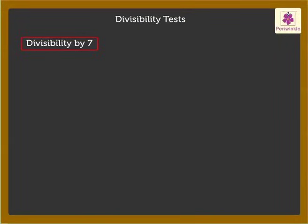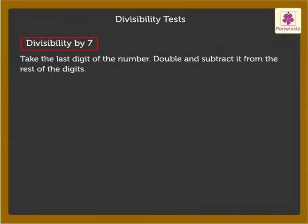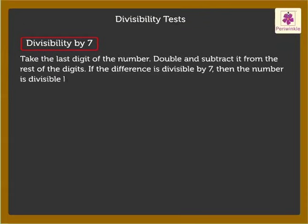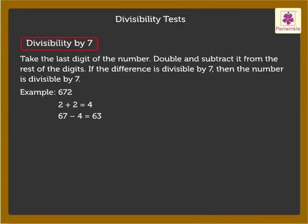Divisibility by 7: Take the last digit of the number, double it and subtract it from the rest of the digits. If the difference is divisible by 7, then the number is divisible by 7. For example, look at the number 672. Double the last digit 2: 2 times 2 is equal to 4. Now subtract 4 from 67, and we get 63. The number 63 is divisible by 7. Thus, 672 is divisible by 7.